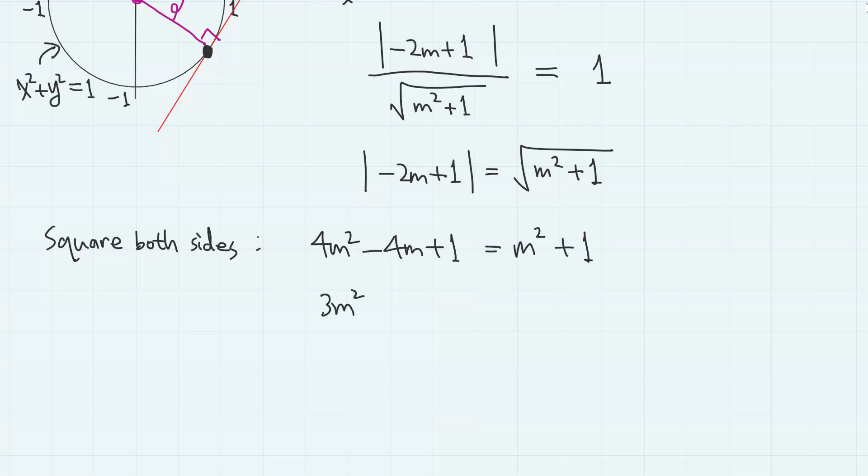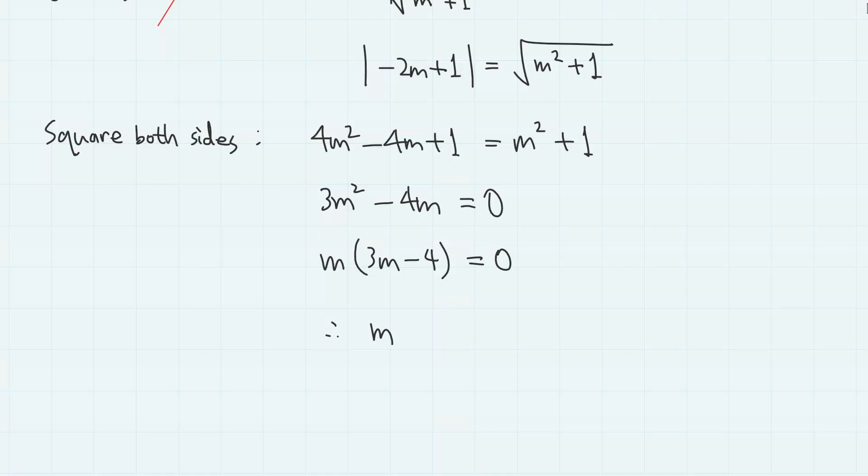So 3m squared minus 4m equals 0. So m times 3m minus 4 equals 0. Therefore, we have m equals 0 and 4 over 3.